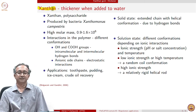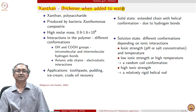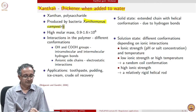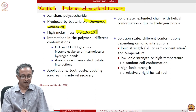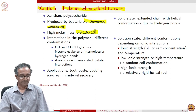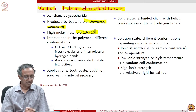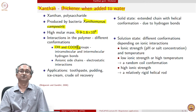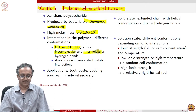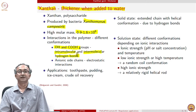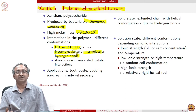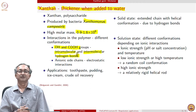Xanthan gum comes from a microorganism. When you add it in water, it acts as a viscosity modifier or a thickener. It is made by bacteria and has a fairly high molecular weight. Very important chemistry of this compound is related to the presence of hydroxyl and carboxylic acid groups which lead to significant hydrogen bonding interactions. Because of interactions between xanthan gum and water, and between xanthan gum molecules, we have a very rich behavior that arises.